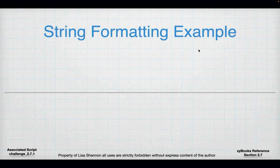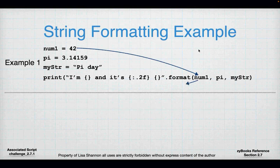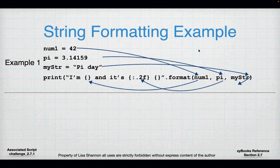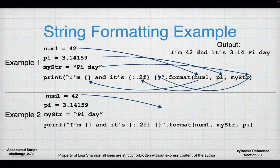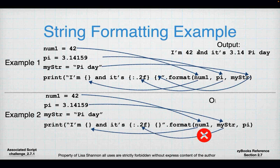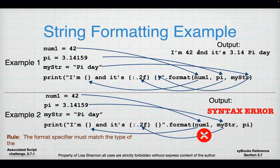Here's the string formatting example. These are positional: pi is in the second position, meister in the third, num1 in the first — they get replaced by their position in the format argument list. In the second example, meister is in the second place where a float is expected, so you get an error — not a syntax error but a logic error. The variable type must match the format specifier. I bring this up specifically because I've seen a lot of students have problems with it.